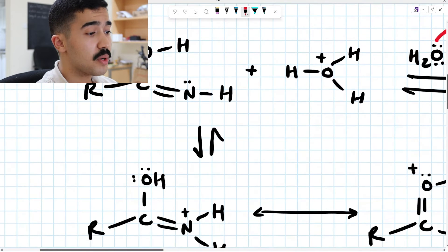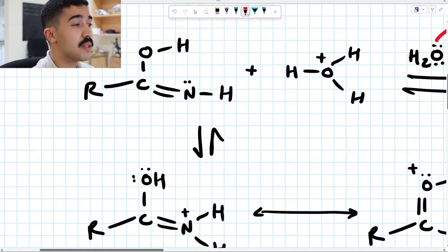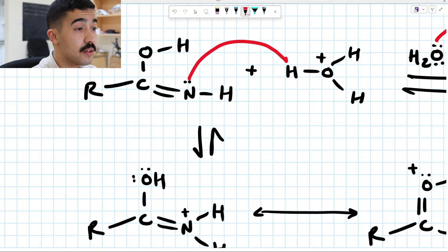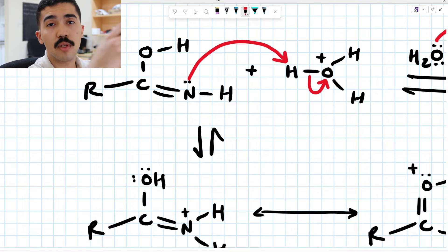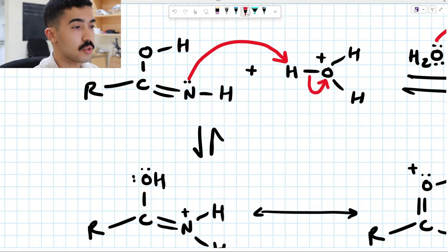Now, what's going to happen is we're going to have the lone pairs on nitrogen come in and attack or remove one hydrogen from the H3O plus group. These electrons are going to collapse towards oxygen. Notice the trend here with this reaction is you're basically forming water, forming water, then it forms into H3O plus and then H3O plus. There's just this constant transfer of protons.